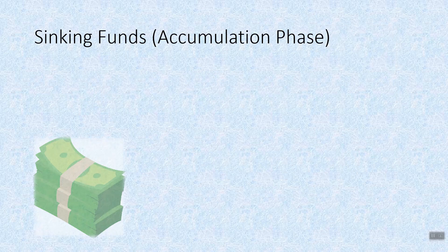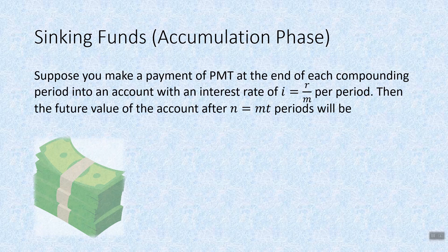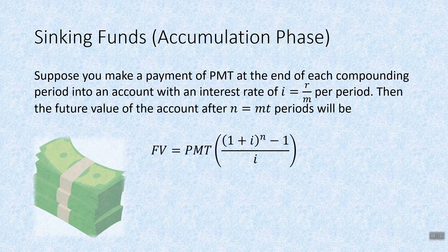Let's talk about the accumulation phase where we're making money. Suppose you make a payment of PMT at the end of each compounding period into an account with an interest rate of i equals r over m per period. Then the future value after n equals mt periods is: FV equals the payment multiplied by the quantity (1 plus i) to the n, which is the same as (1 plus r over m) to the mt.